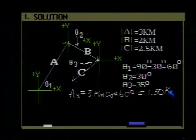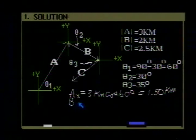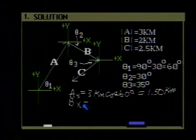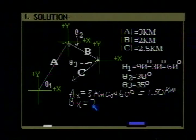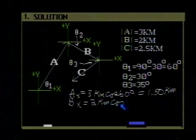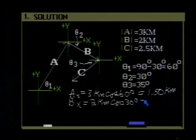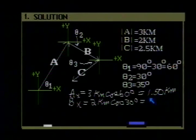B sub x is the magnitude of B, 2 kilometers, times the cosine of 30 degrees. That gives a value of 1.73 kilometers.